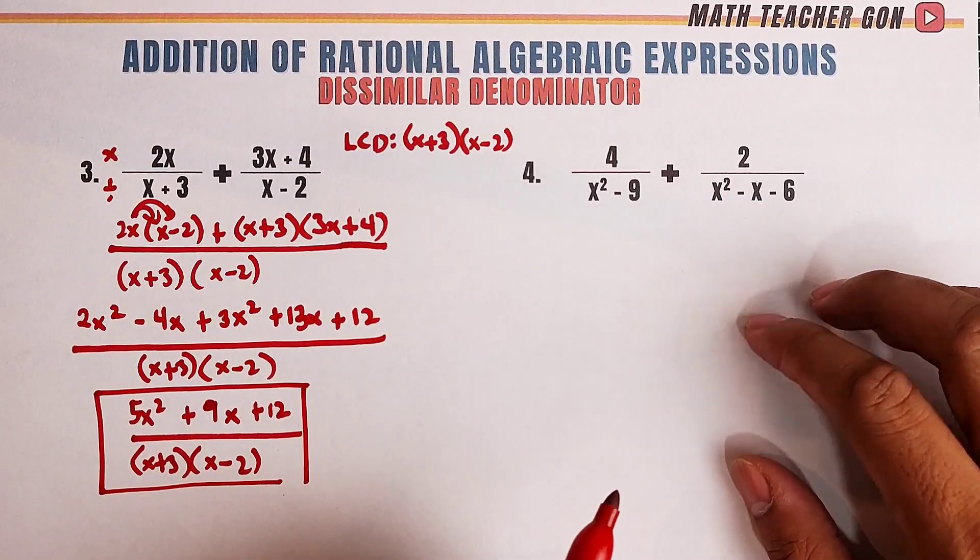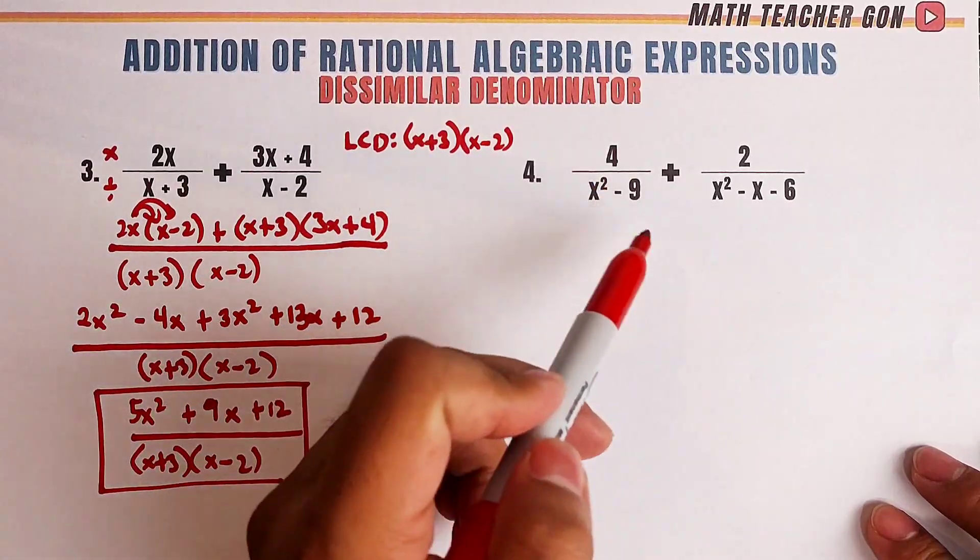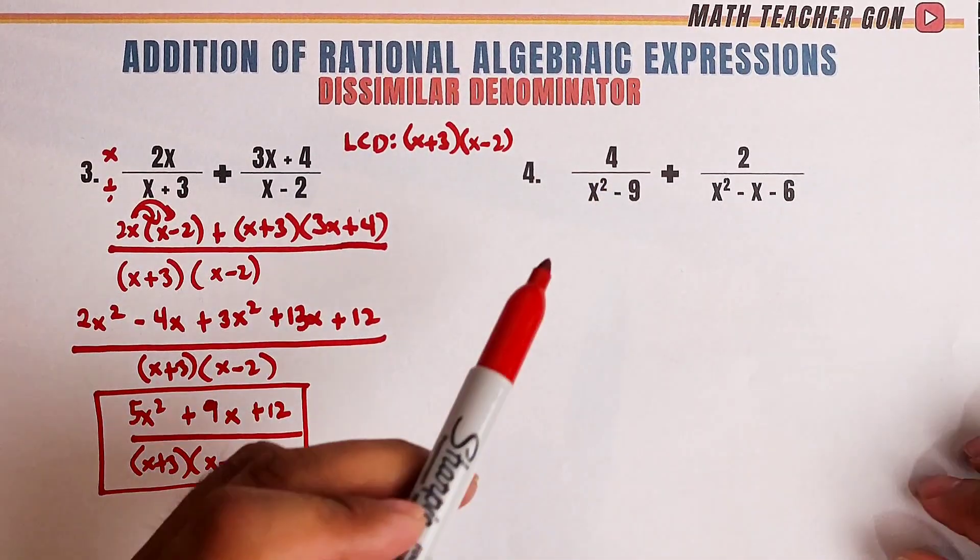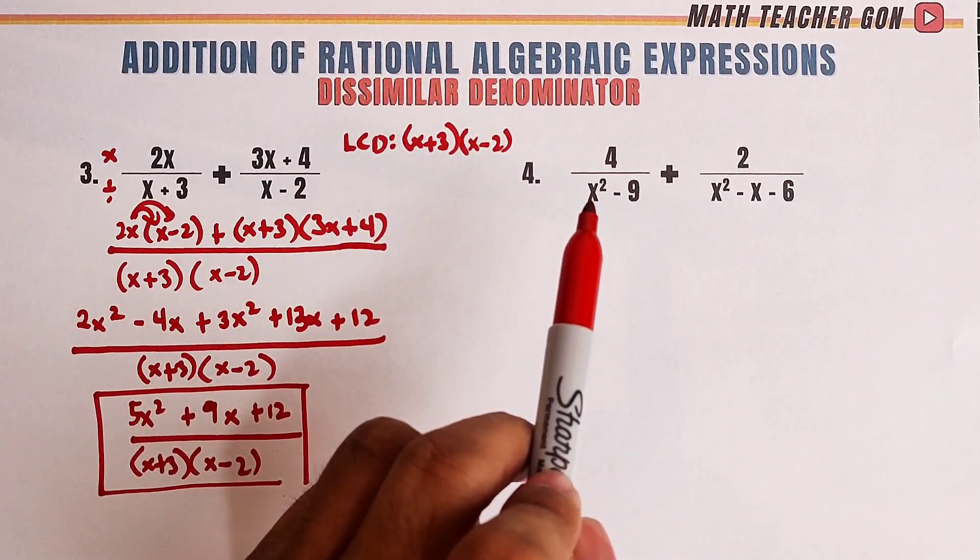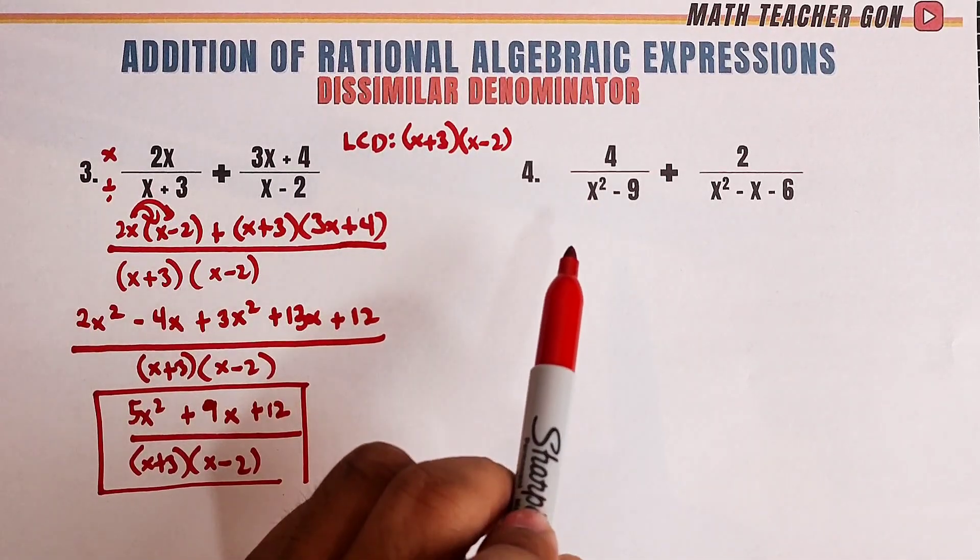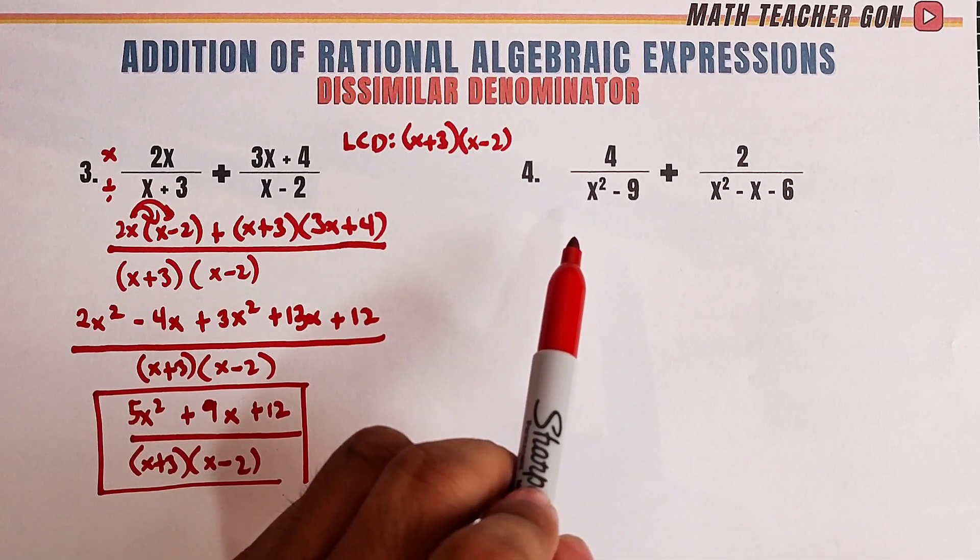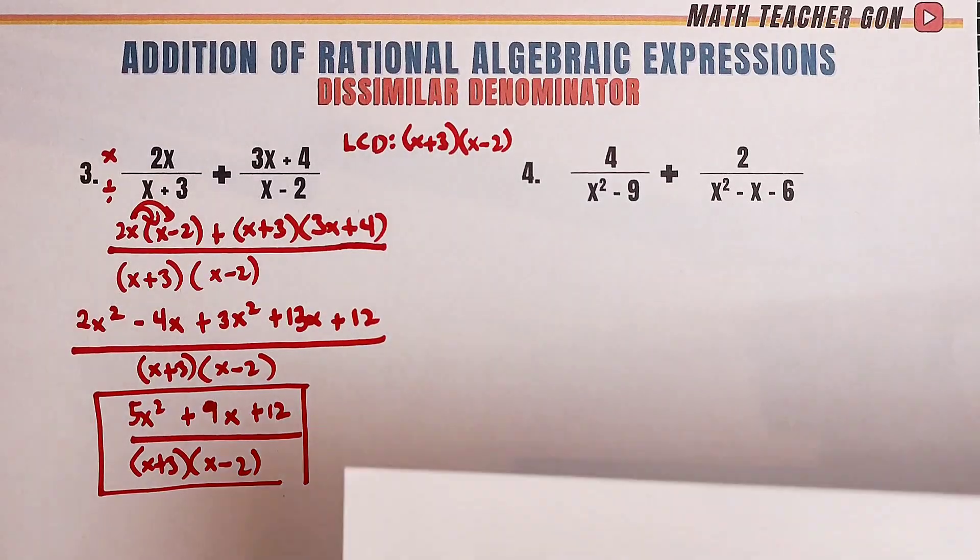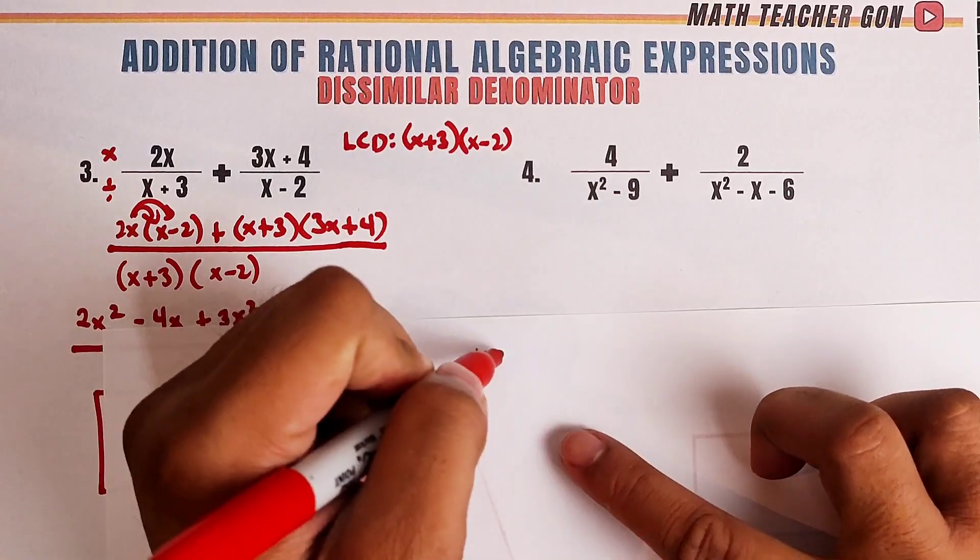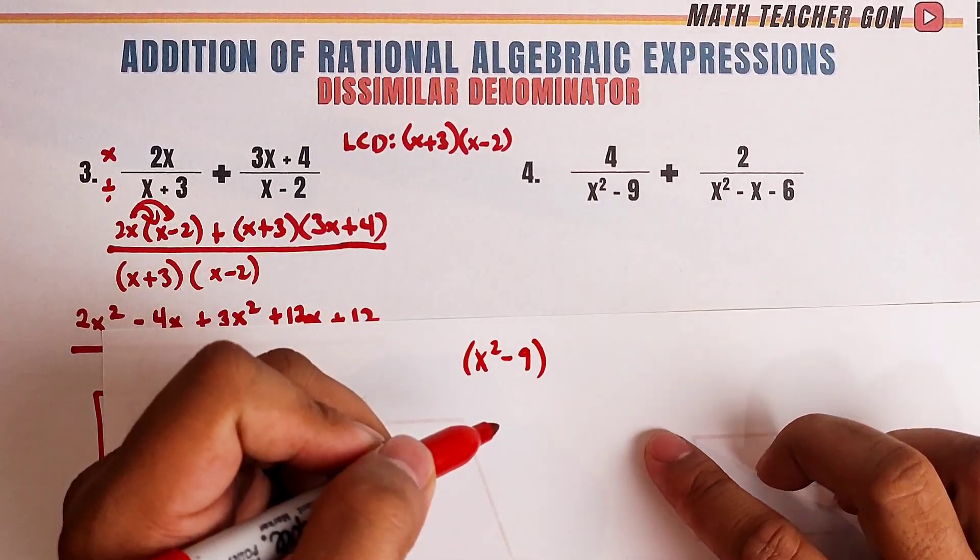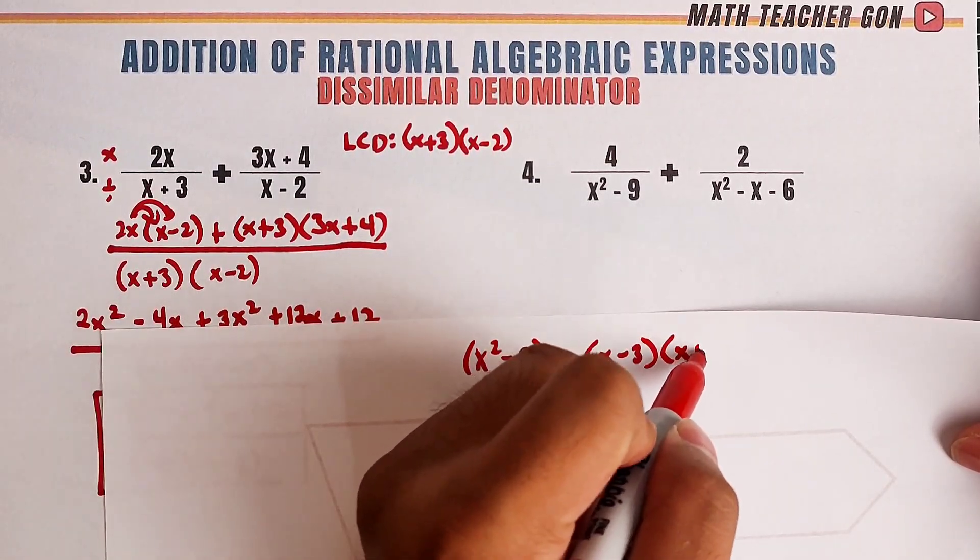Now, what about this one? Is this complicated? Somehow, because it will require you to factor out this. As you can see, guys, you need to master your factoring. This one can be factored out using difference of 2 squares. Let me get some paper here so you can know how it's going. What we need to do here is to get the factors of x squared minus 9. This can be factored out using difference of 2 squares. So, this will be x minus 3, then x plus 3.